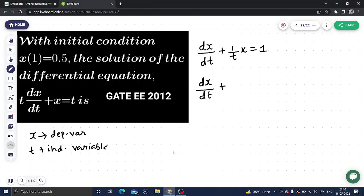plus a function of t times x equals a function of t. One can also be treated as a function of t because it is nothing but t to the power 0. So P and Q might be constant or a function of t, depends upon the question. Now how to solve this?